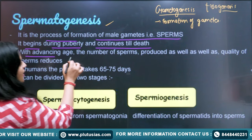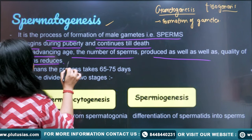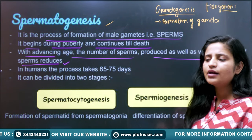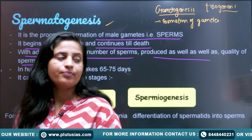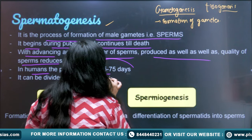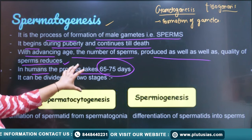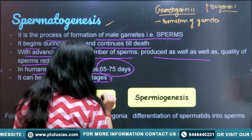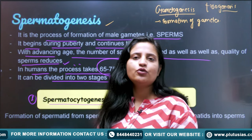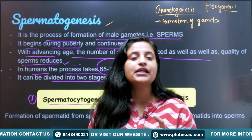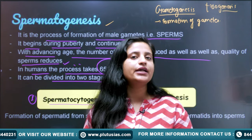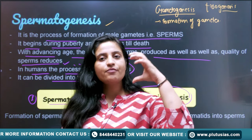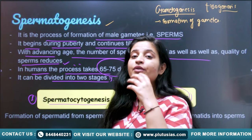With advanced aging, the number of sperm produced as well as the quality of sperm is going to be reduced - quality and quantity will degrade, but the process will not stop. In humans, spermatogenesis is completed in 65 to 75 days. Basically, spermatogenesis is divided into two parts: the first is spermatocytogenesis - the formation of spermatid from primordial germ cell, and the second is spermiogenesis - the maturation of the spermatid into a sperm.